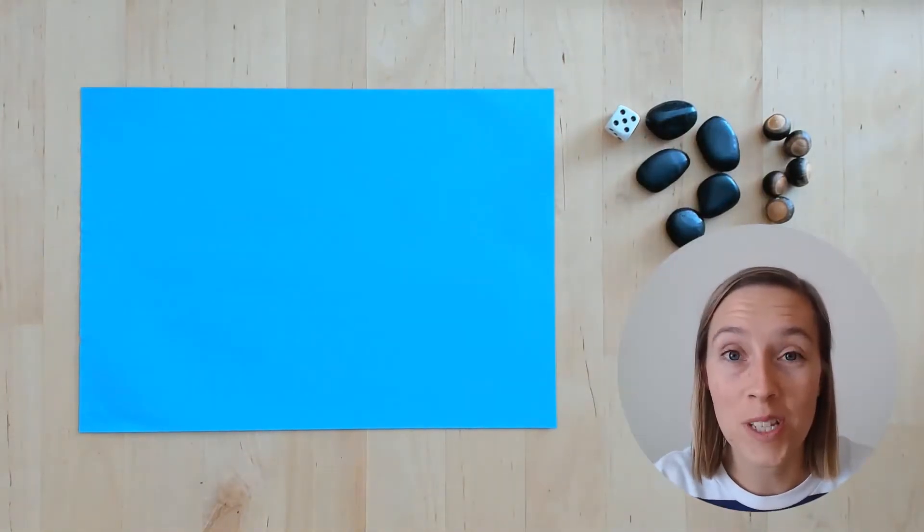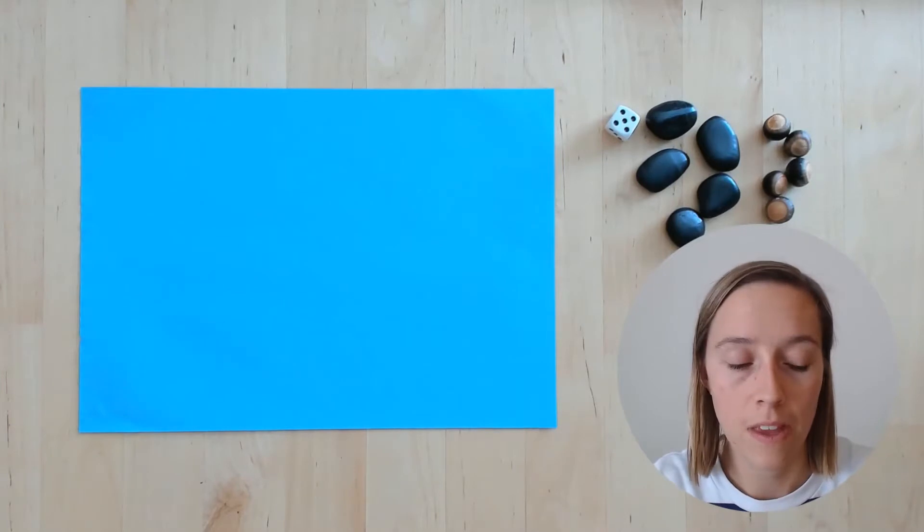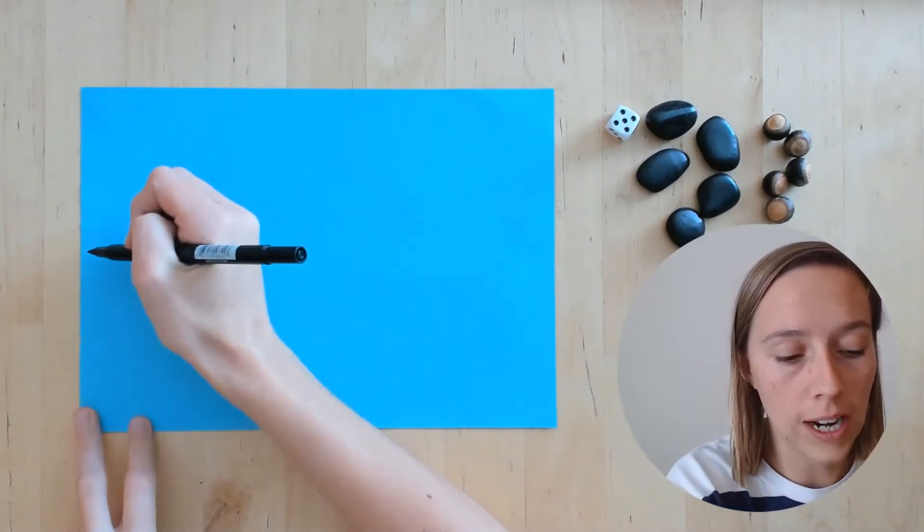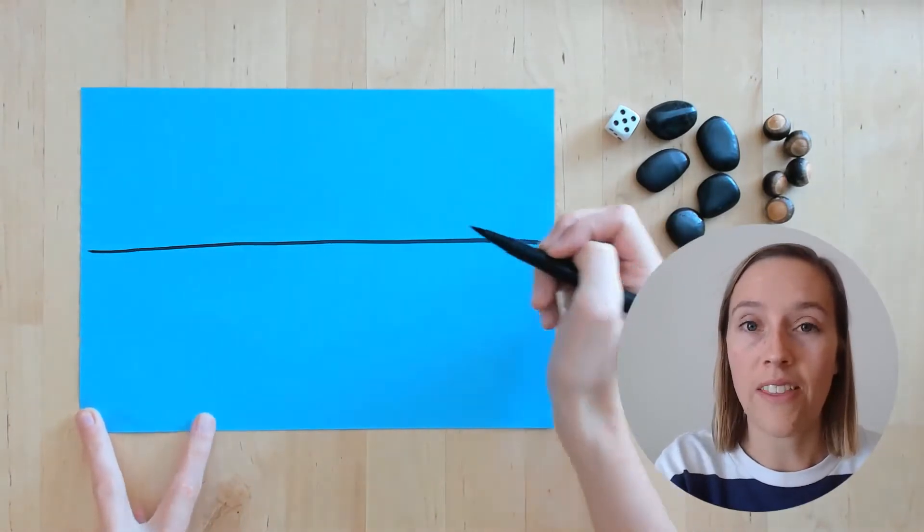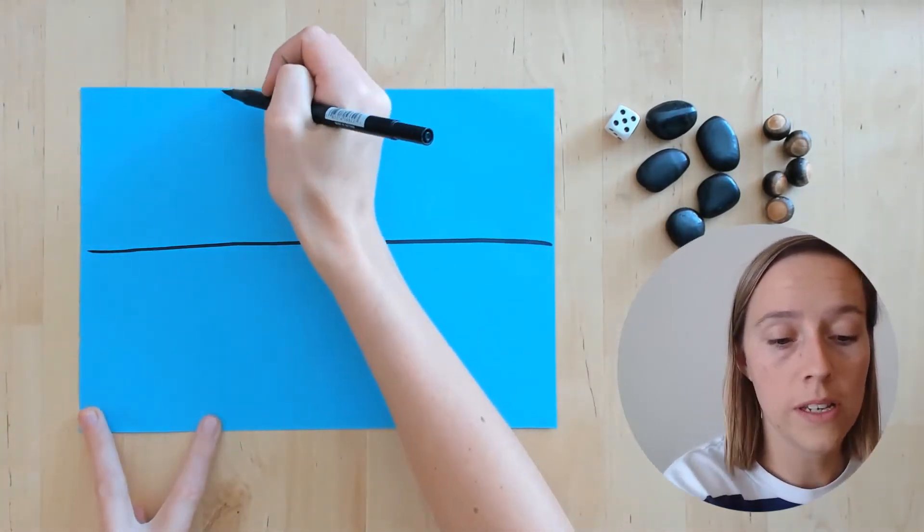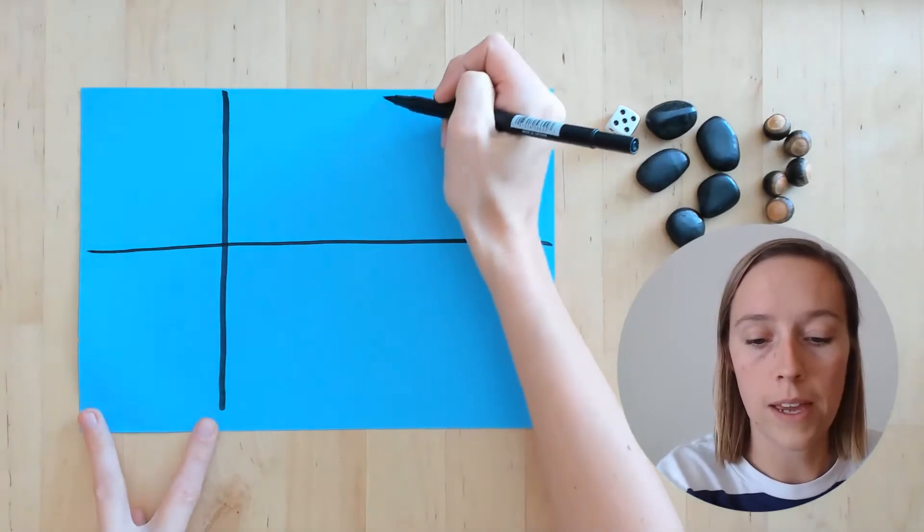Now we need to set up our piece of paper so we're ready to play the game. The first thing we need to do is draw a line through the middle of the page, like that. And then two lines going downwards so that there are six boxes on the page.